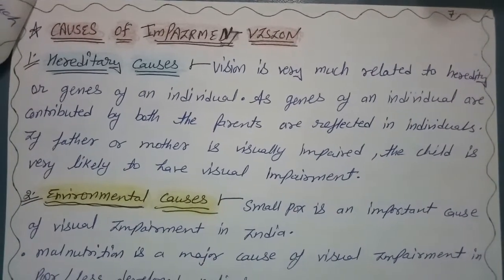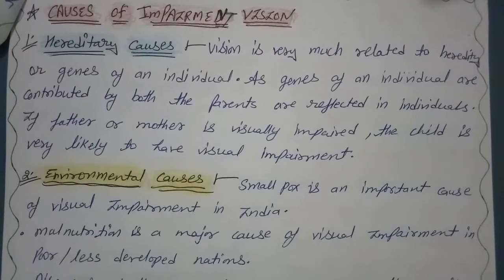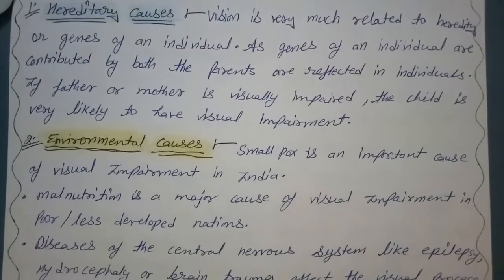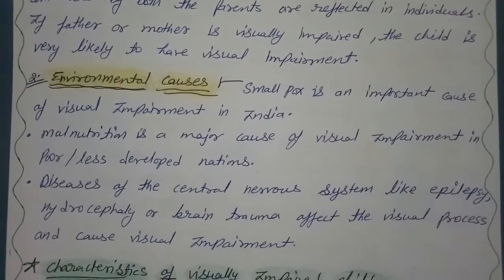Causes of vision impairment. First point is high dietary causes. Second point is environmental causes.